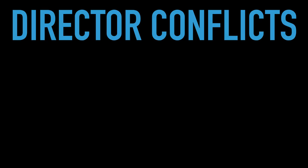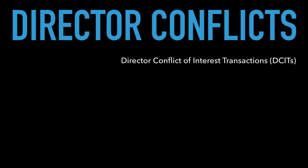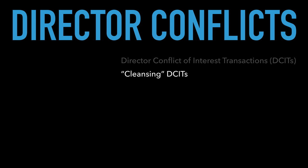Let's talk about director conflicts. We have a couple of different components to cover today. We're going to start by identifying director conflict of interest transactions — we'll call them DCITs for short. A DCIT is simply where a director is on both sides of a transaction. They're not necessarily bad; in fact, sometimes they're good. We're going to talk about how they can be cleansed and how they can be permitted.